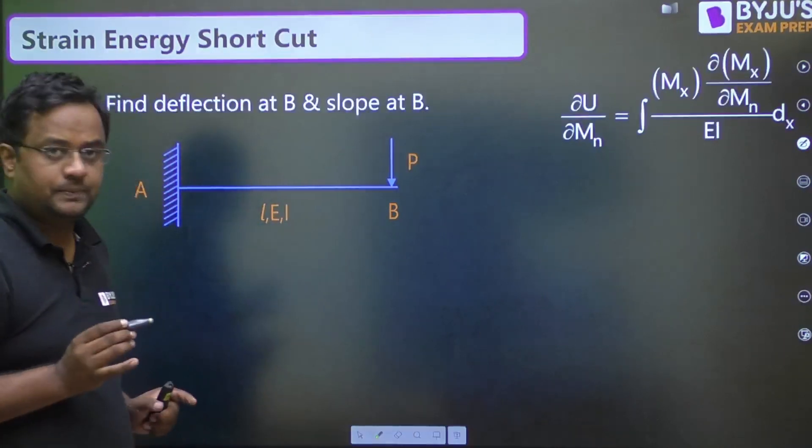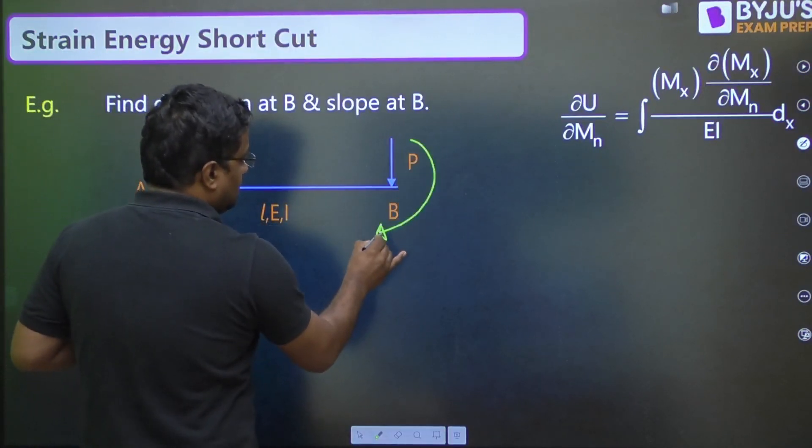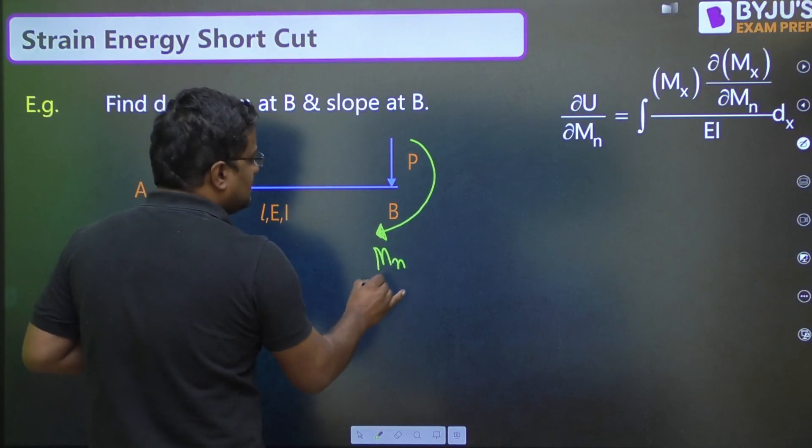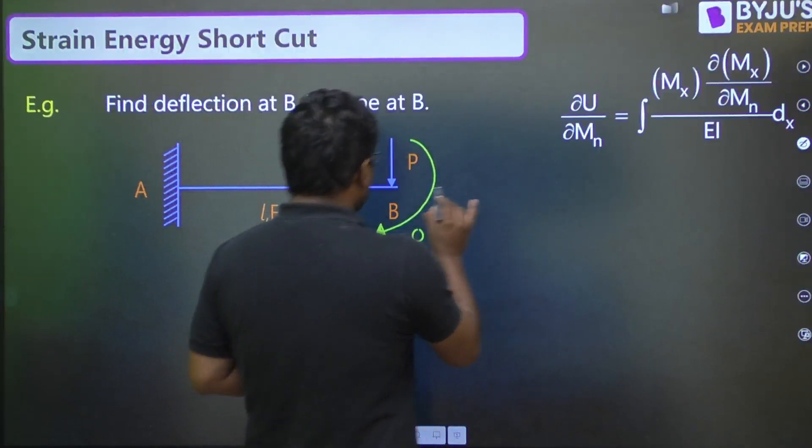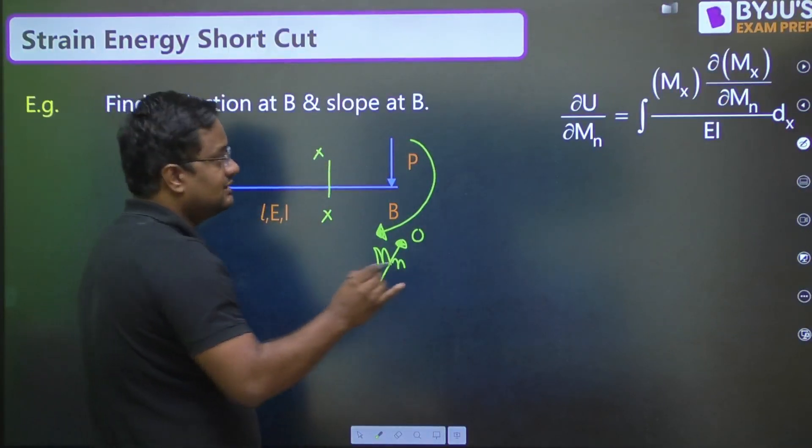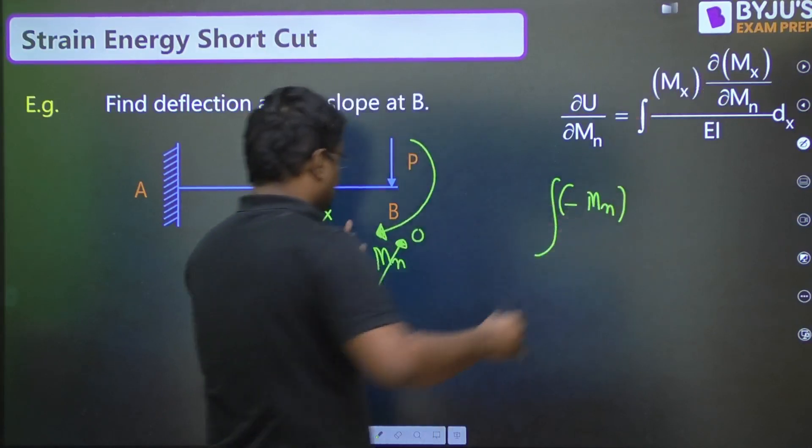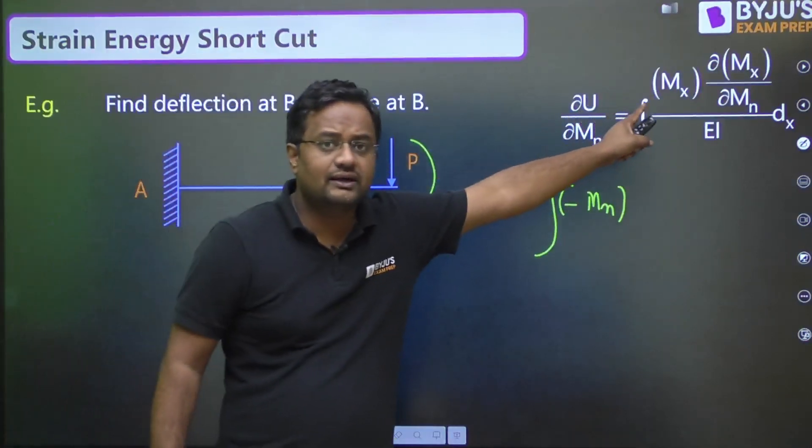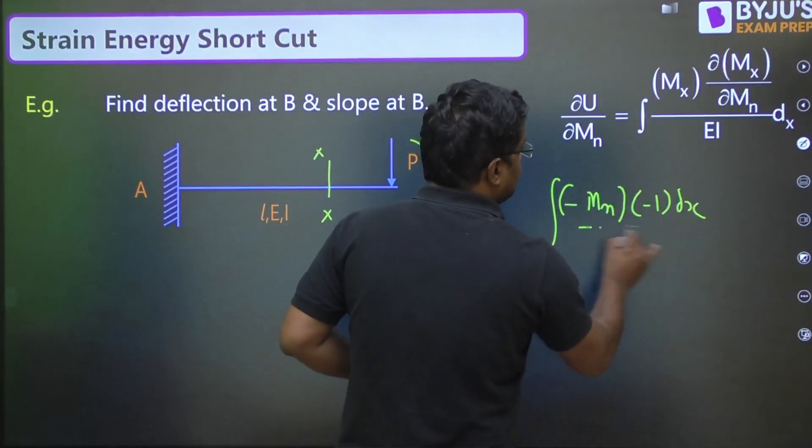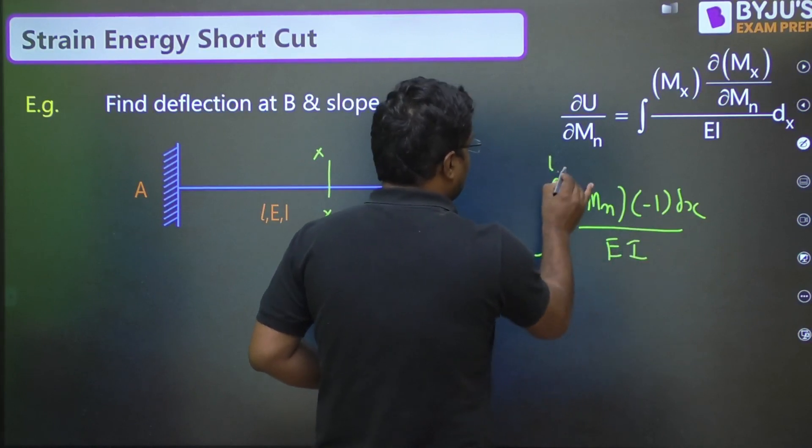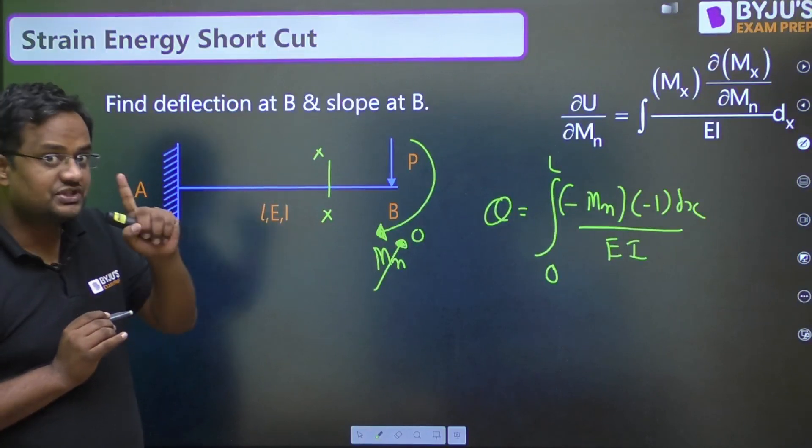Now, how to find slope? For slope, a moment should be acting where we want slope. And here, it is MN. Yes, there is actually no moment acting. So, at the end, we will take it 0. Now, here, what is bending moment at XX section? It is minus MN. Whatever written here, differentiate with respect to MN into DX upon EI, putting it from 0 to L.